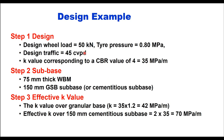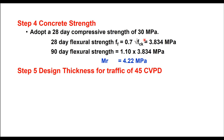Let us take an example. Design wheel load is 50 kN, tire pressure 0.8 MPa, design traffic 45 CVPD. Corresponding to a CBR of 4%, the K value is 35 MPa per meter from the IRC code table. We provide a subbase of 75 mm thick WBM, so the effective K value will be 20% more than 35, i.e., 42 MPa per meter. For M30 concrete (30 MPa compressive strength), the 28-day flexural strength is 3.834 MPa by the formula, and the MR value at 90 days will be 4.22 MPa.